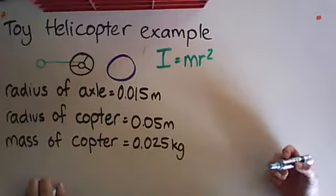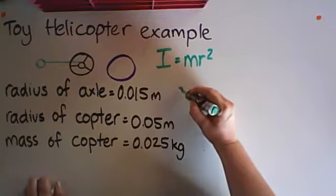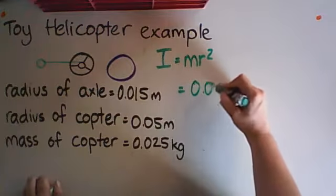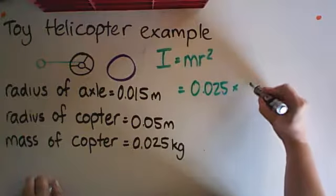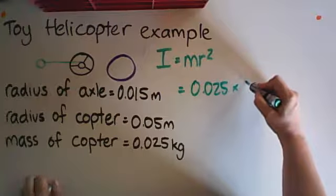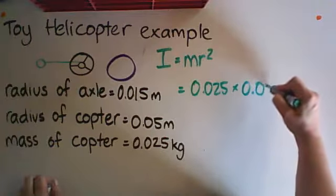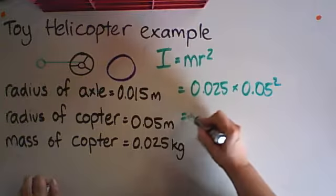When we work that out, our mass times by the radius of the helicopter, that works out to be 6.25 × 10⁻⁵ kilogram meters squared.